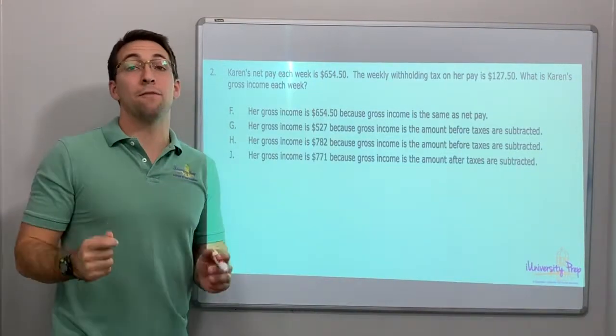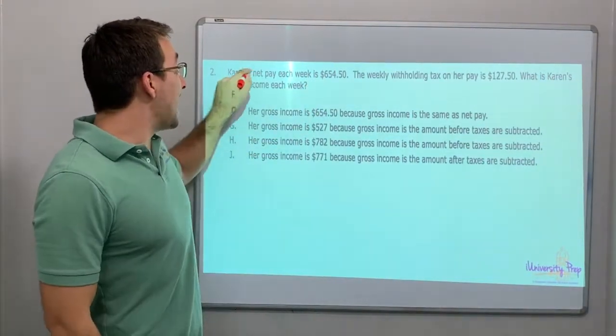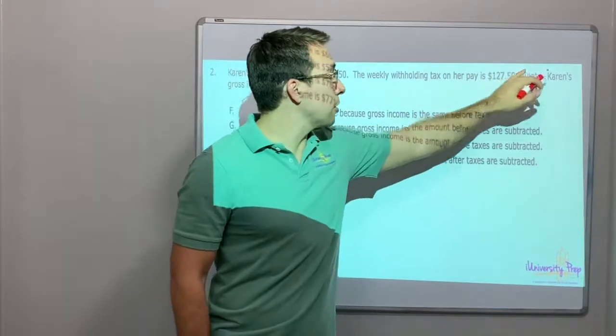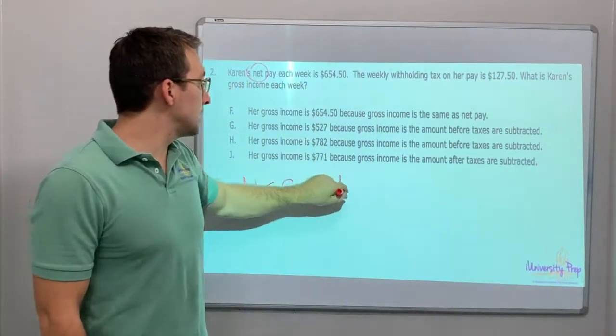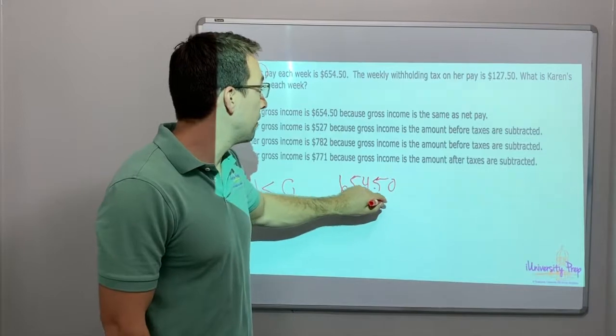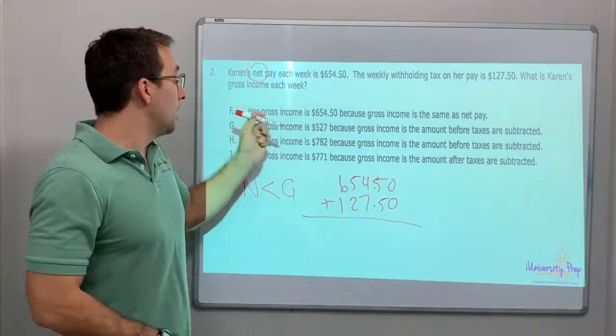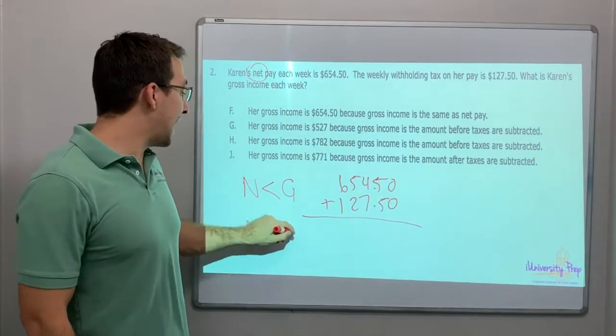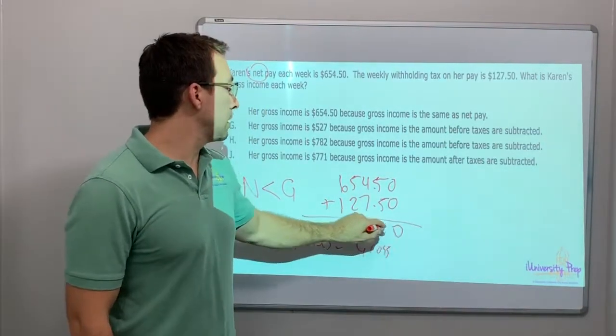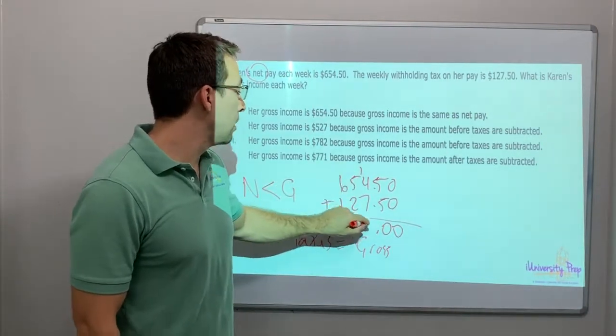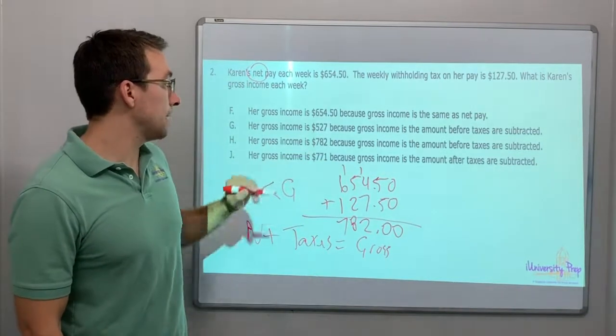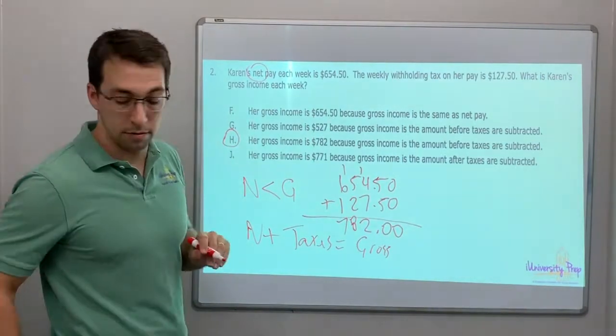Karen's net pay is $654.50. Net pay. Net is less than gross. The weekly withholding tax on her payment is $127.50. What is Karen's gross income? So $654.50 plus $127.50. That's what we're doing because we're adding them together. Net plus taxes or withholdings equals gross. 0 plus 0, 5 plus 5 is 0. Carry my 1. 12, 8, 7.82. $782. Before taxes are subtracted. There we go.